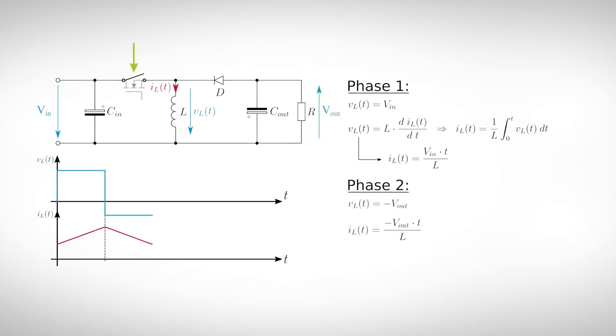When the MOSFET opens, the inductor wants to maintain its current flow and the voltage across it changes its polarity. The diode is now in forward direction and the stored magnetic energy can be transferred into the output capacitor. The current of the inductor falls linearly.